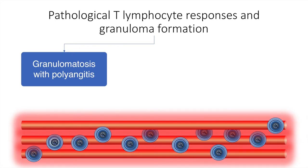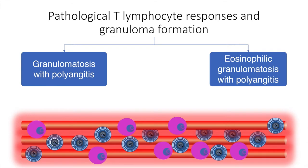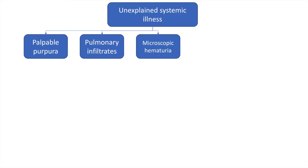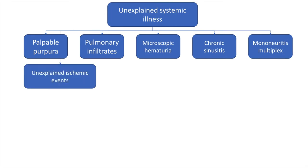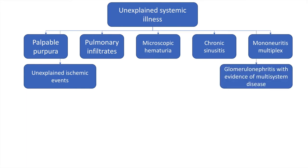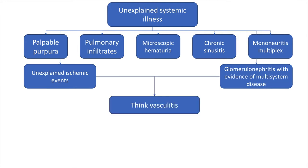We have also seen ANCA antibodies as an underlying mechanism in granulomatosis with polyangiitis, and eosinophilic granulomatosis with polyangiitis may also be caused by pathological T-lymphocyte responses. In a patient with unexplained systemic illness, if there is palpable purpura, pulmonary infiltrates, microscopic hematuria, chronic sinusitis, mononeuritis multiplex, unexplained ischemic events such as stroke or deep vein thrombosis, or glomerulonephritis with multi-system disease, we must think of vasculitis.